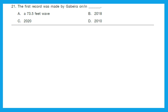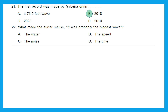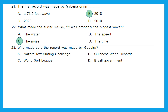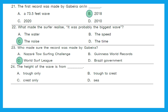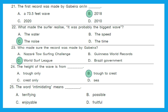Let's answer the questions. Question 21: The first record was made by Gabeira in — and the right option is option B, 2018. Question 22: What made the surfer realize it was probably the biggest wave? The right answer is its noise. Option C. Question 23: Who made sure the record was made by Gabeira? It was the World Surf League, WSL. Question 24: The height of the wave is measured from toe to crest. Question 25: The word 'intimidating' means terrifying.